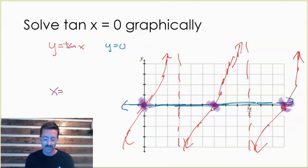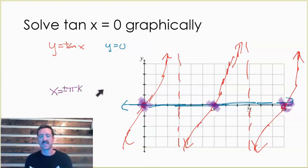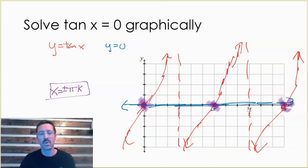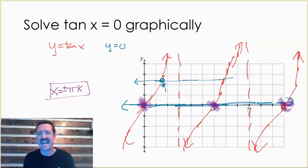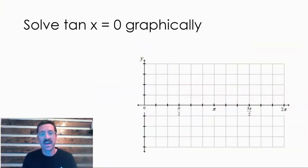These solutions repeat every pi unit, so the general solution is x equals plus or minus pi k, since we can move in the negative direction as well. The moral of the story is: to solve trig equations graphically, just graph both sides of your equation as their own functions and see where they intersect. For really complicated ones where it's hard to see exactly where the intersection is, that's where the algebraic tools we'll learn in the next video come in.